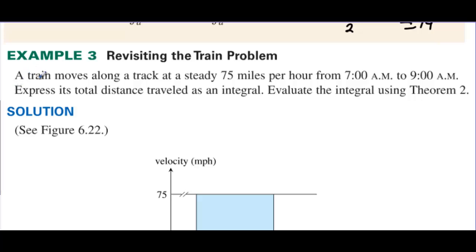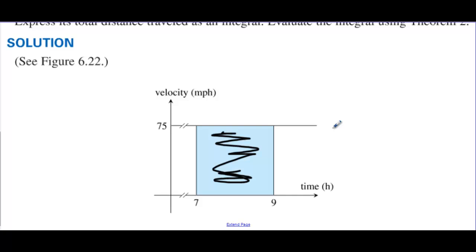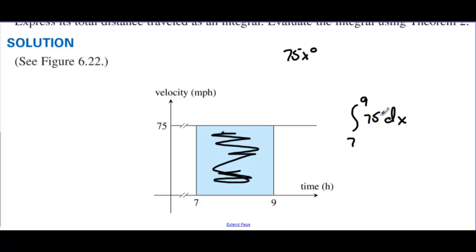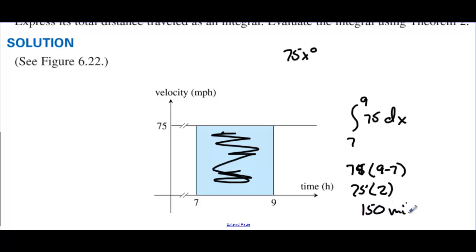Revisiting the train problem: a train moving along a track at a steady 75 miles per hour from 7 to 9 a.m. — express its total distance traveled as an integral and evaluate. We integrate from seven to nine the constant function y equals 75 with respect to x. That's equal to 75 times (nine minus seven), so 75 times two, which is 150. So 150 miles.